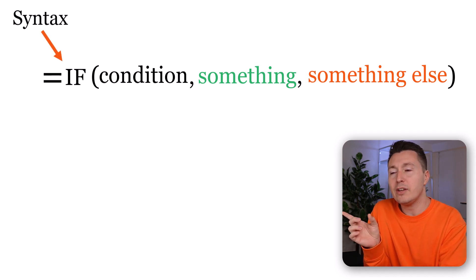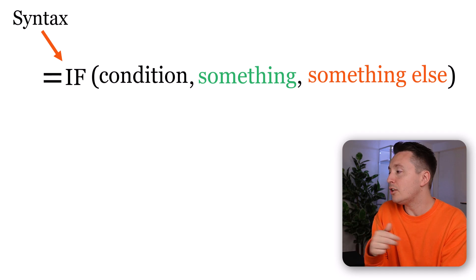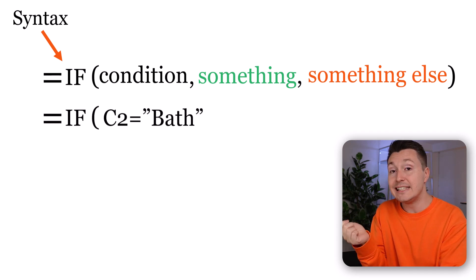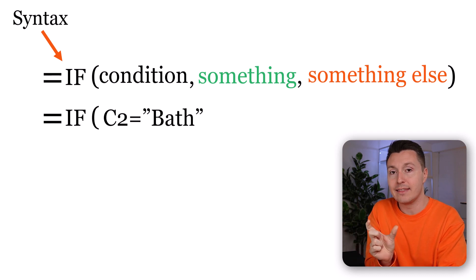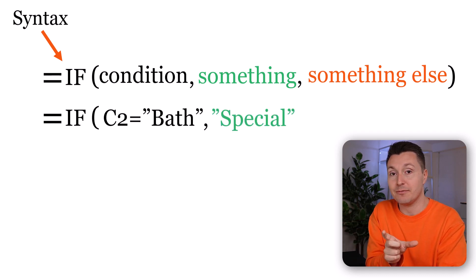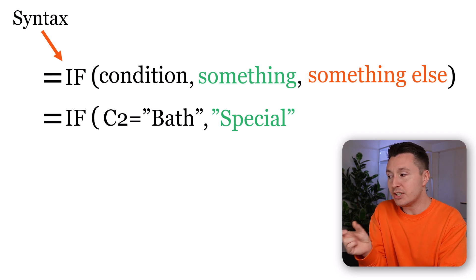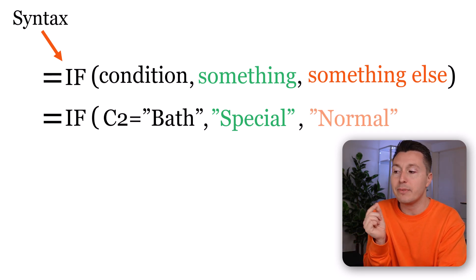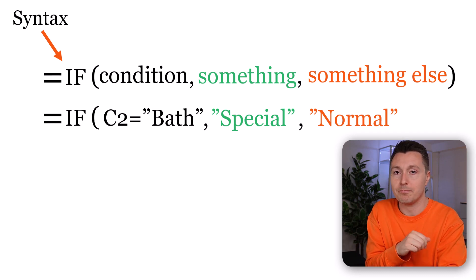In this specific example, it could be more like: equal IF, open parenthesis — if cell C2 is equal to bath, then the freight type should be special. And if it's not the case, if C2 is not equal to bath, then something else happens, and that is write normal — close parenthesis.